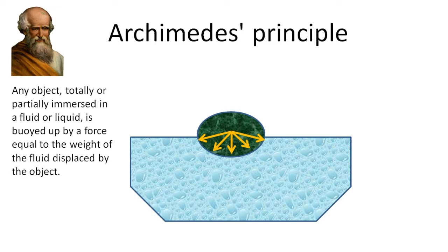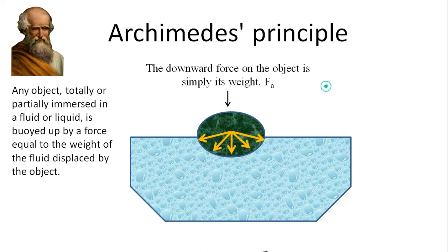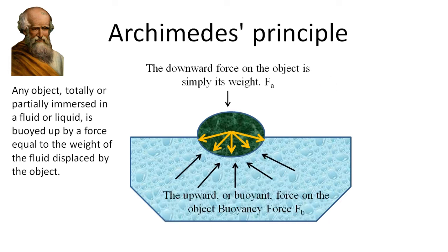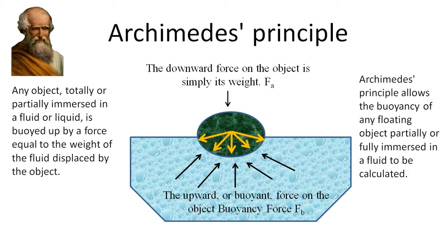Now the downward force on the object is simply its weight as A, and the upward force or buoyant force on the object is force at B. Archimedes principle allows the buoyancy of any floating object partially or fully immersed in a fluid to be calculated.